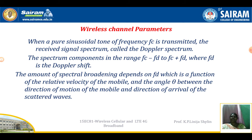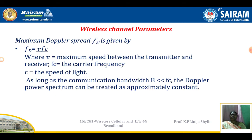The spectrum components vary in the range f_c − f_d to f_c + f_d, where f_d is the Doppler shift. f_d is a function of the relative velocity of the mobile and the angle θ between the direction of motion of the mobile and the direction of arrival of the scattered waves. The formula is: f_d = v · f_c / c, where v is the maximum speed, f_c is the carrier frequency, and c is the speed of light. When the communication bandwidth B is much less than f_c, the Doppler power spectrum can be treated as a constant.